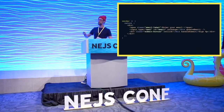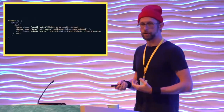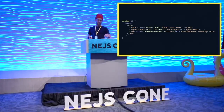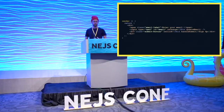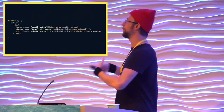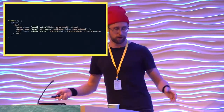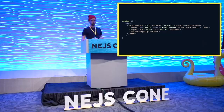Two: when we label inputs, a label element should be used with a 'for' attribute that corresponds to an ID on the input. This lets assistive technology know that a given input has an associated label — and that's not just for people who are less able. It actually makes forms easier to interact with for everybody because you can click the label and it will focus the field. Three: while divs can be coded to behave and look like buttons, doing so robs the button of any semantic meaning it would otherwise have. A button element's default behavior within a form is to submit that form, making it more resilient for when — not if — JavaScript fails.